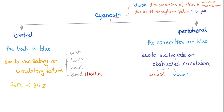Cyanosis occurs because deoxyhemoglobin is more than 5. Central cyanosis means the entire body is blue — mainly tongue and lips. Tongue and lips are almost never present in peripheral cyanosis. Central cyanosis results from ventilatory or circulatory failure: brain, lung, heart, or blood problems such as methemoglobin.